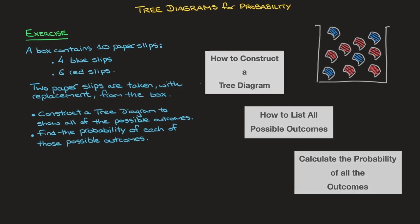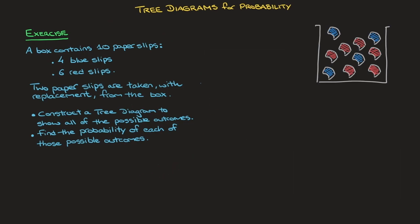For that I'm going to use the exercise that you see here, in which we're told that a box contains 10 paper slips — four are blue and six are red. We're then told two paper slips are taken with replacement from the box, and we're asked to construct a tree diagram to show all of the possible outcomes of the experiment, and to find the probability of each of those possible outcomes.